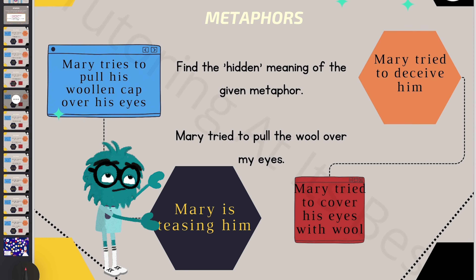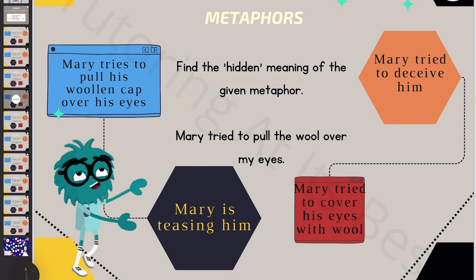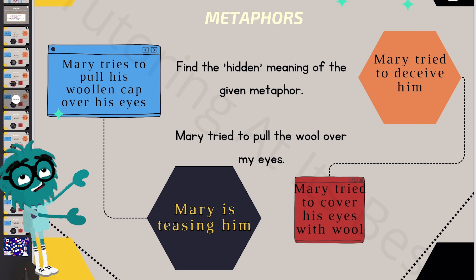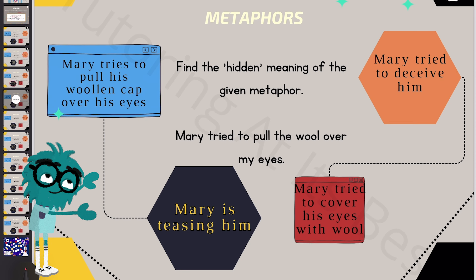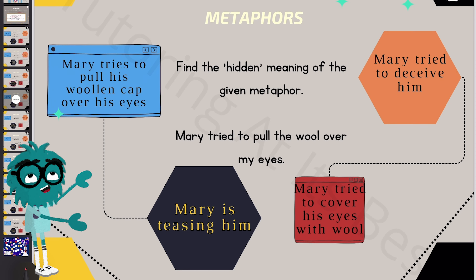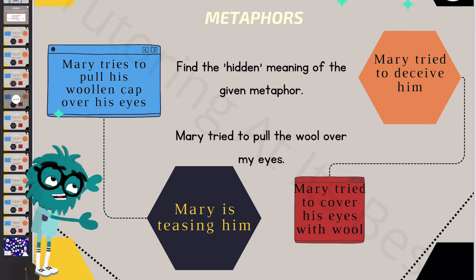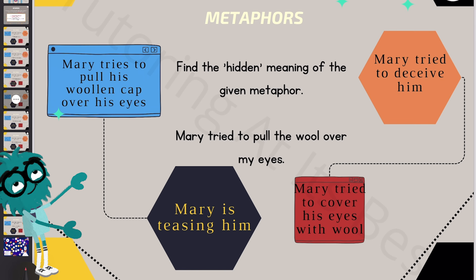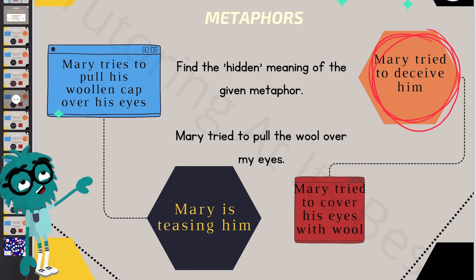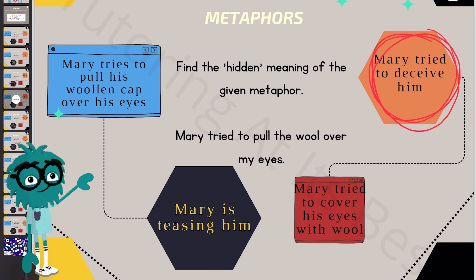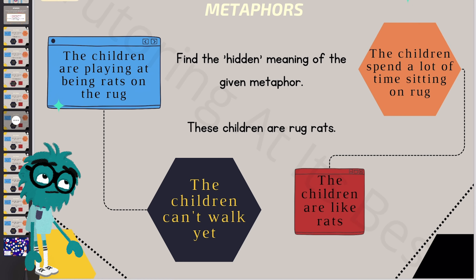Over to the next question: 'Mary tried to pull the wool over my eyes.' Picture this — somebody covering your eyes, meaning they don't want you to see something. So could she be teasing him? Well, in all honesty, Mary tried to deceive him. If somebody tries to cover your eyes, they want to disguise something so you cannot see it. So Mary tried to deceive him.